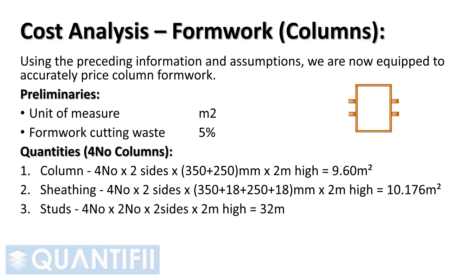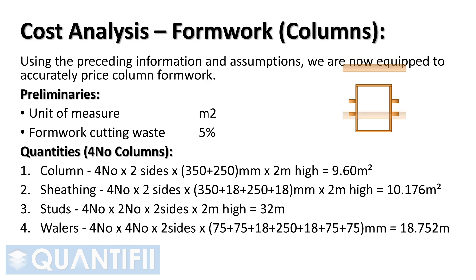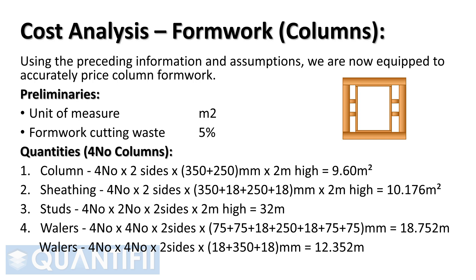Studs: 4 columns × 2 studs × 2 sides × 2 m high = 32 m. Whalers to the short side: 4 columns × 4 whalers × 2 sides × (75 mm whaler width + 75 mm stud width + 18 mm sheathing + 250 + 18 + 75 + 75 mm for studs and whalers on opposite side) = 18.752 m. Whalers to the long side: 4 columns × 4 whalers × 2 sides × (18 + 350 + 18 mm) = 12.352 m.